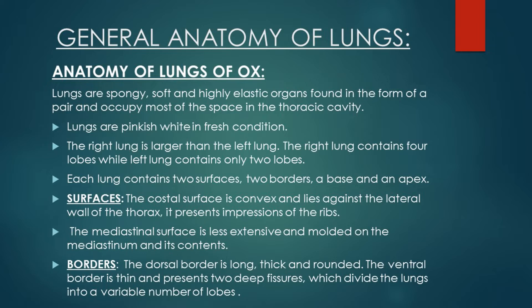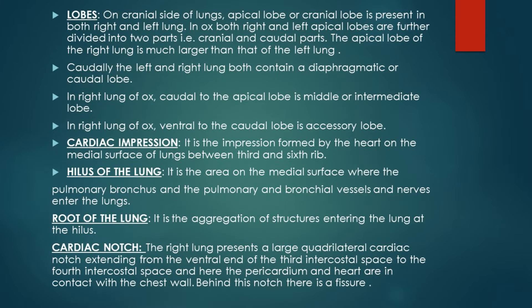Now let's talk about the borders of the lungs. There are two borders: one is the dorsal border, which is always long, thick, and rounded, while the ventral border is thin and presents two deep fissures. These deep fissures help to divide the lungs into a variable number of lobes.